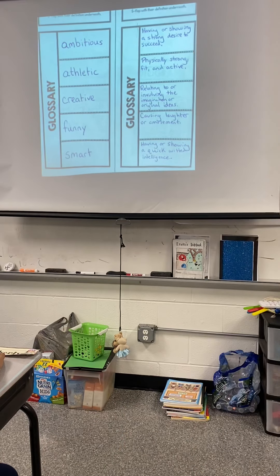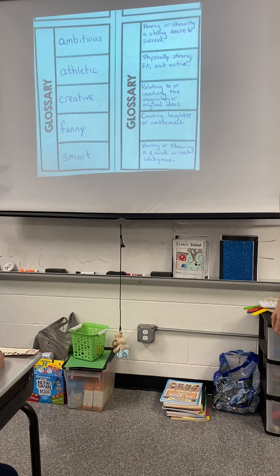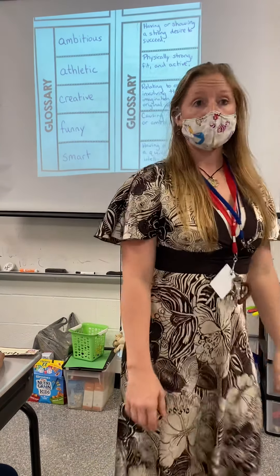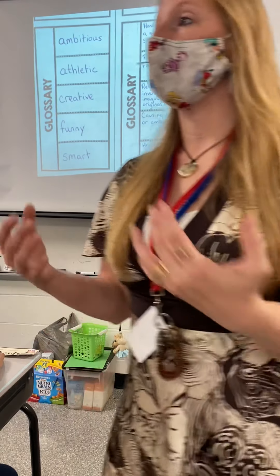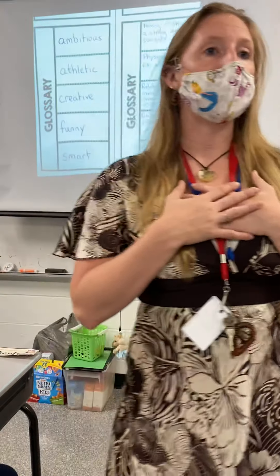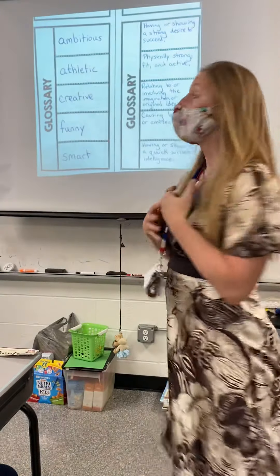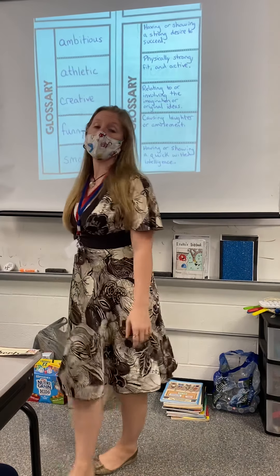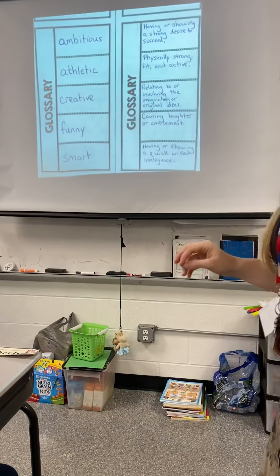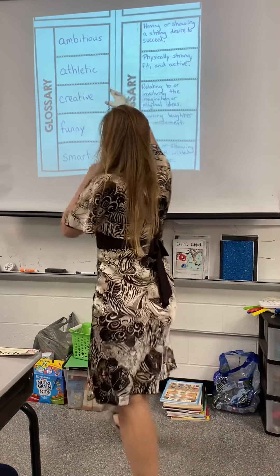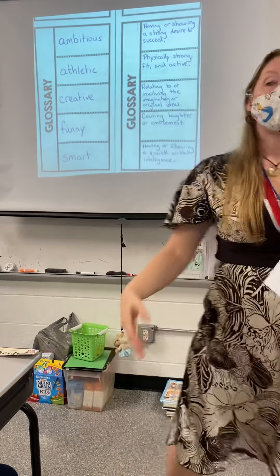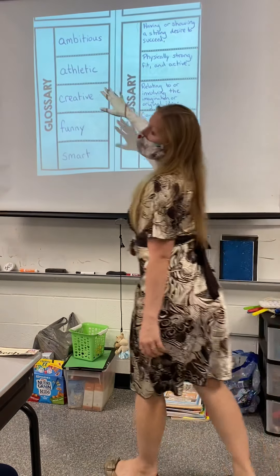I picked five words off of my graph — words about my personality, my character traits. I wrote those in alphabetical order. A glossary is in alphabetical order, so it's very important that you make sure these words are in alphabetical order. Then you're going to look up those words in the dictionary and write the definition you find.